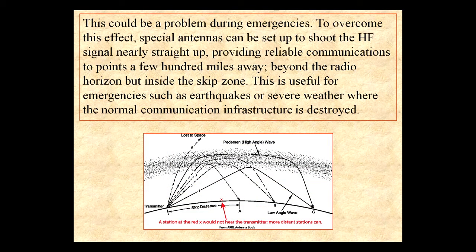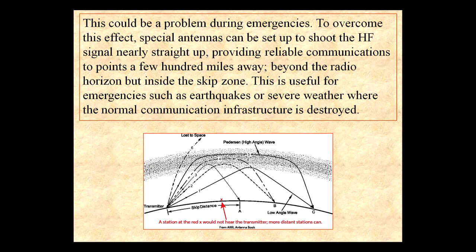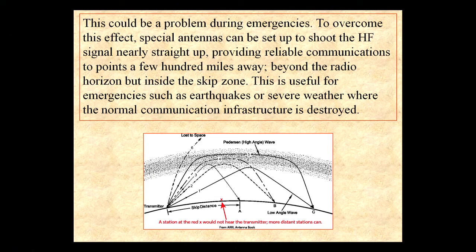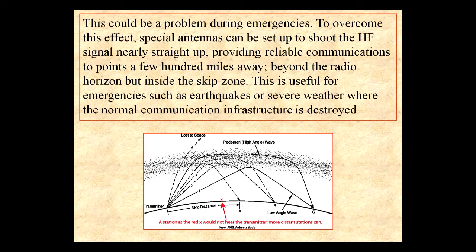This could be a problem during emergencies. To overcome this effect, special antennas can be set up to shoot the HF signal nearly straight up so it bounces straight back, providing reliable communications to points a few hundred miles away — beyond the radio horizon but inside the skip zone. This is useful for emergencies such as earthquakes or severe weather where normal communication infrastructure is destroyed.